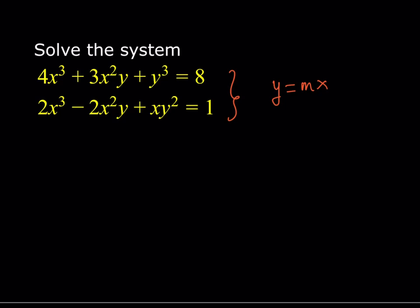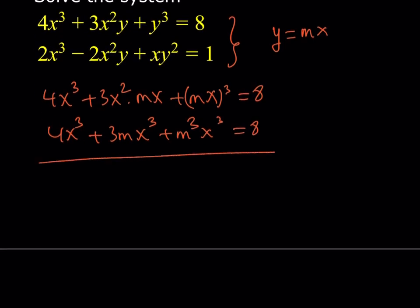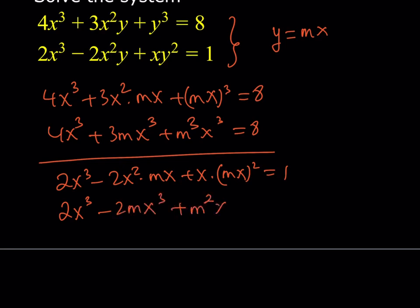Now I'm going to do the replacements. In the first equation, I get 4x³ + 3x²(mx) + (mx)³ = 8. Simplifying gives 4x³ + 3mx³ + m³x³ = 8. This is one of my equations. In the second equation, 2x³ - 2x²(mx) + x(mx)² gives 2x³ - 2mx³ + m²x³ = 1.